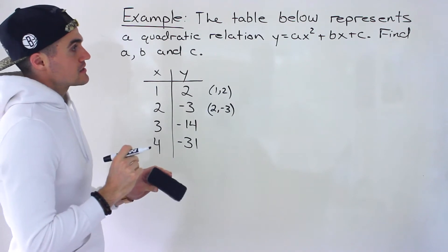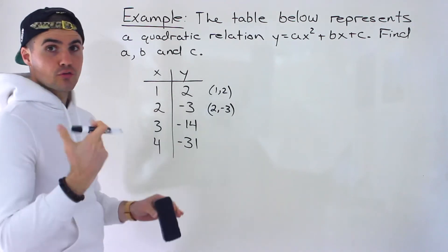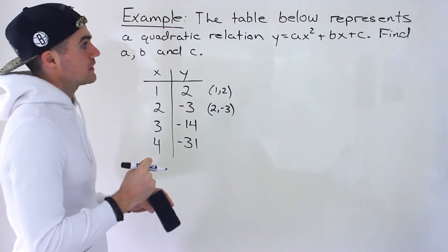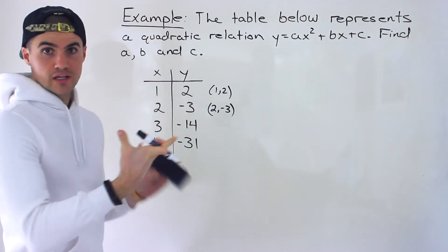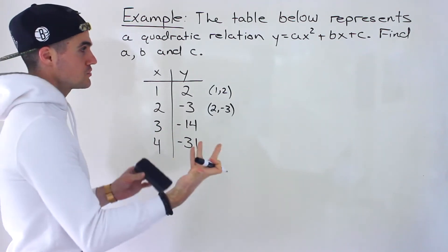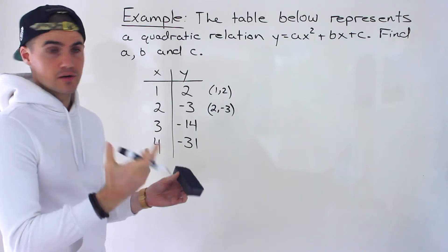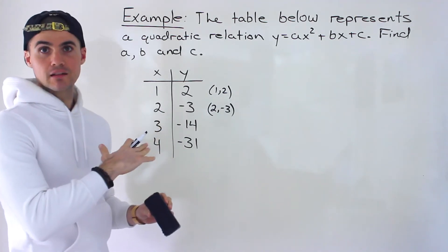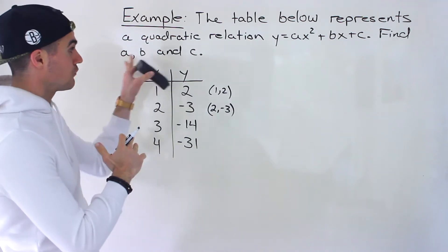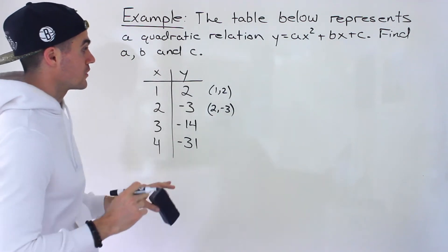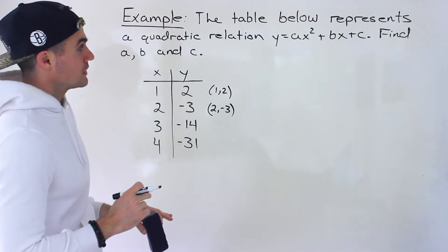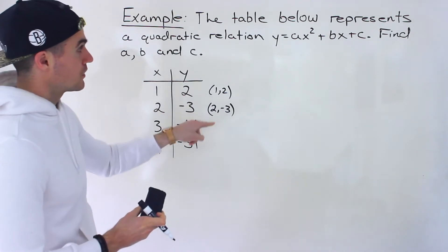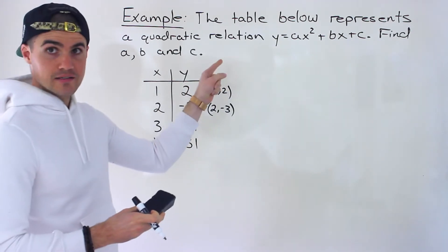Now, in this case, notice that we are solving for three values: a, b, and c. So what we're going to need is three different equations. Then we can do substitution or elimination on those three equations — going back to linear systems, but in this case solving for three variables. The way we create those three equations is by plugging in these coordinates for x and y.